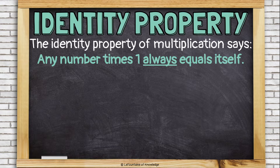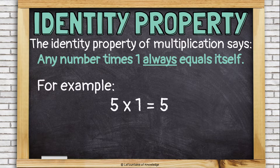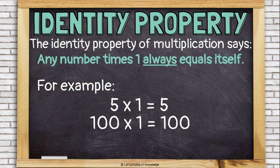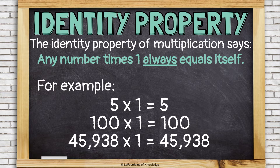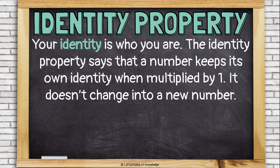The identity property says any number times one always equals itself. For example, five times one equals five, 100 times one equals 100, 45,938 times one equals 45,938. Your identity is who you are. The identity property says that a number keeps its own identity when multiplied by one — it doesn't change into a new number.